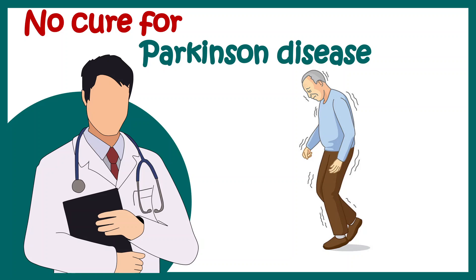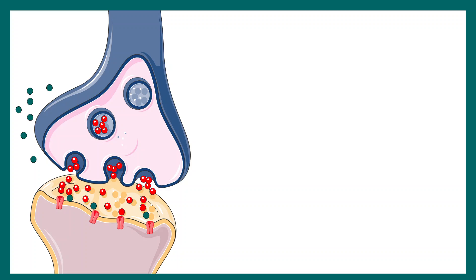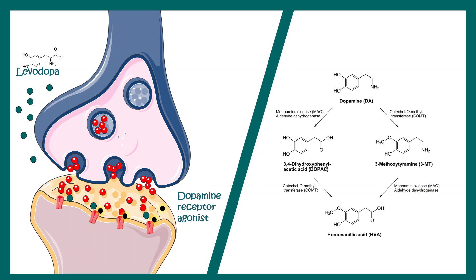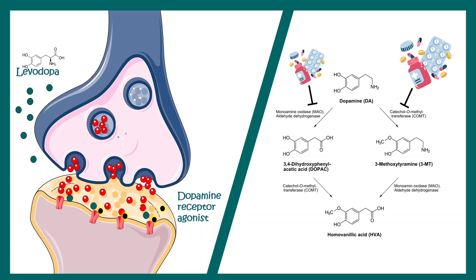There is no cure for Parkinson's. Existing medications can help improve the situation, increase life expectancy, and improve cognition, but cannot cure the disease. These medications include levodopa, a compound which can be utilized to generate dopamine, addressing the lack of dopamine in the synapses. There are also dopamine receptor agonists, which work similarly to dopamine by activating dopamine receptors.